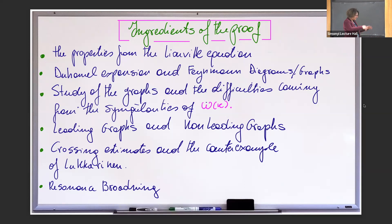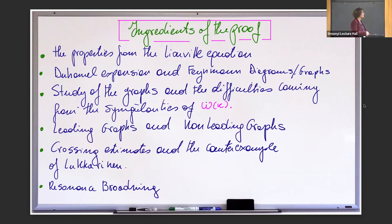In this forest of graphs, you have to recognize the leading graphs — the ones that, like in the formal derivation, will give you the operator Q, the collision operator — from the non-leading graphs, which you want to send to zero. There are crossing estimates using the work of Lukkarinen-Spohn, but there is a counter-example by Lukkarinen, which is exactly for the type of omega we have in this system. And finally, what is the resonant broadening to finish up?